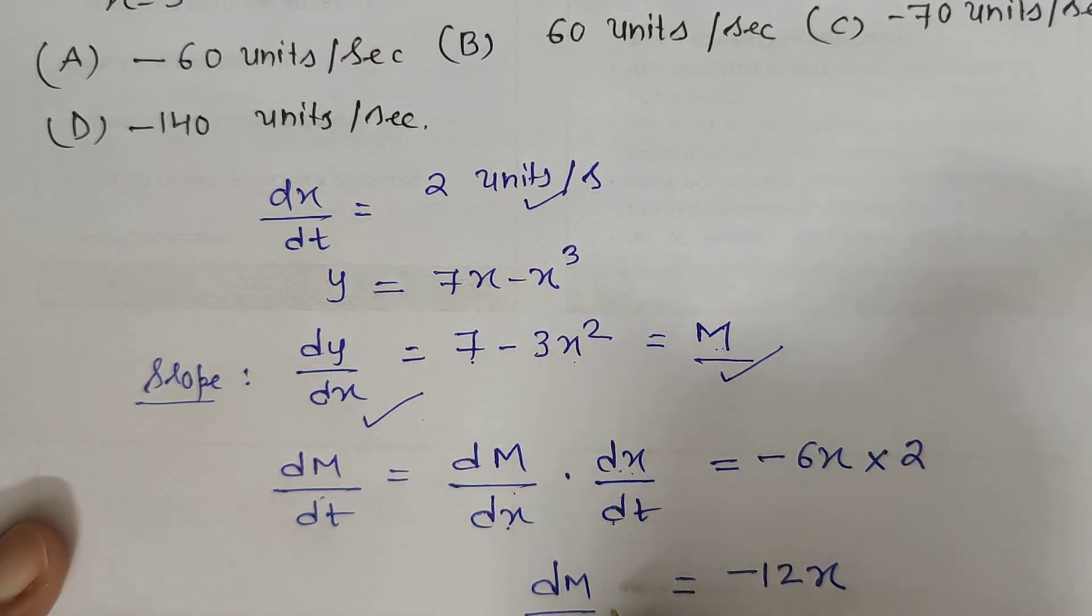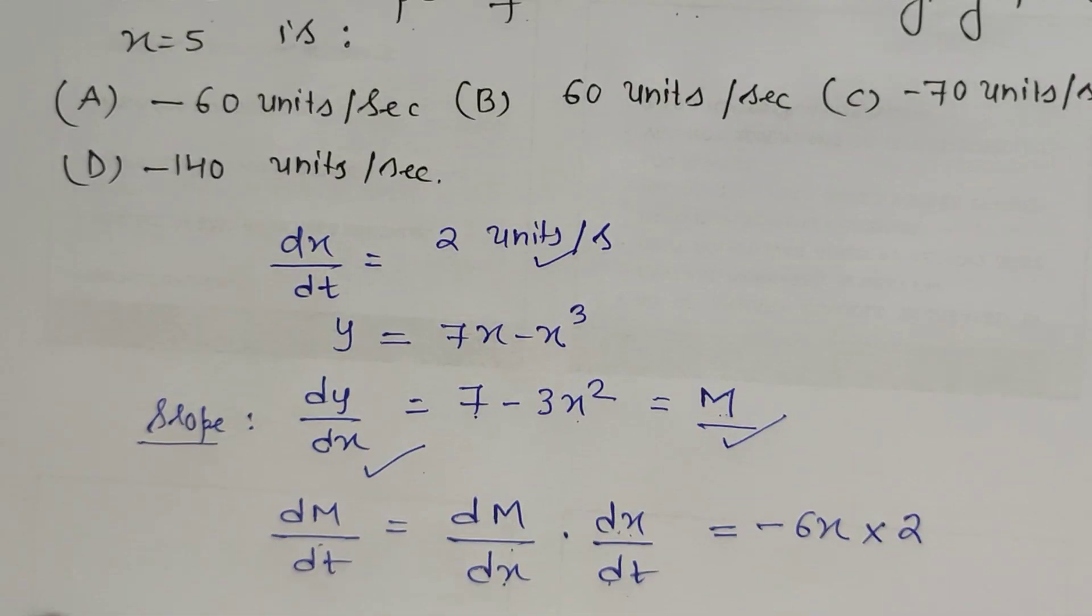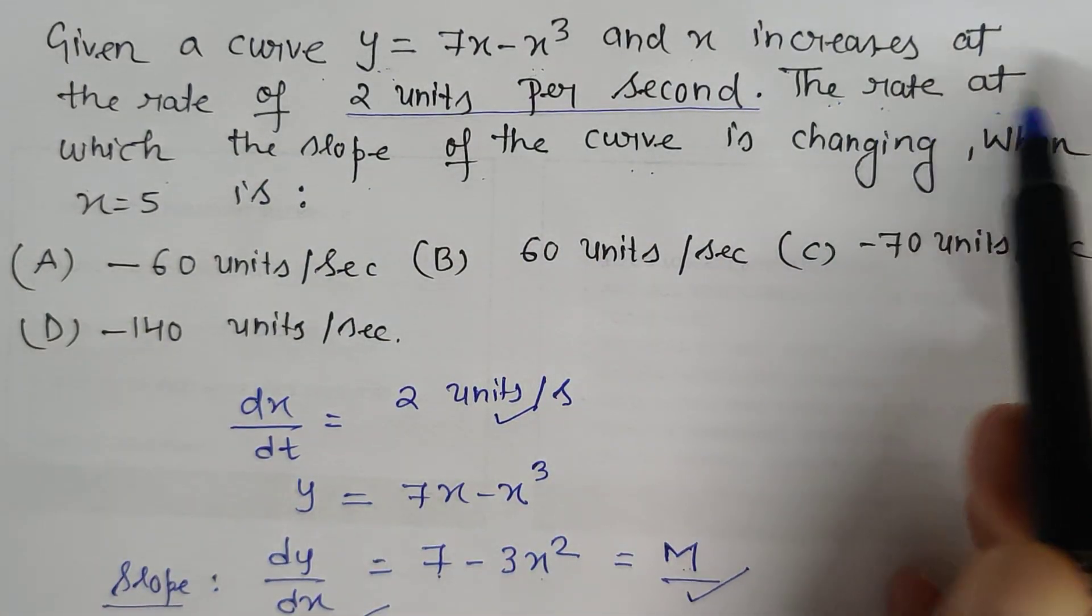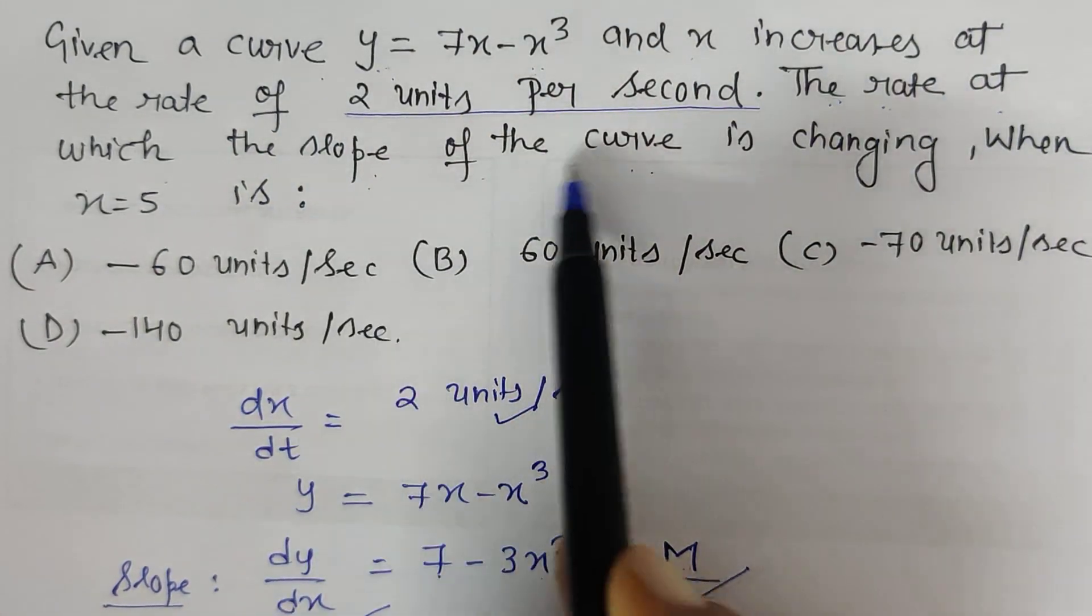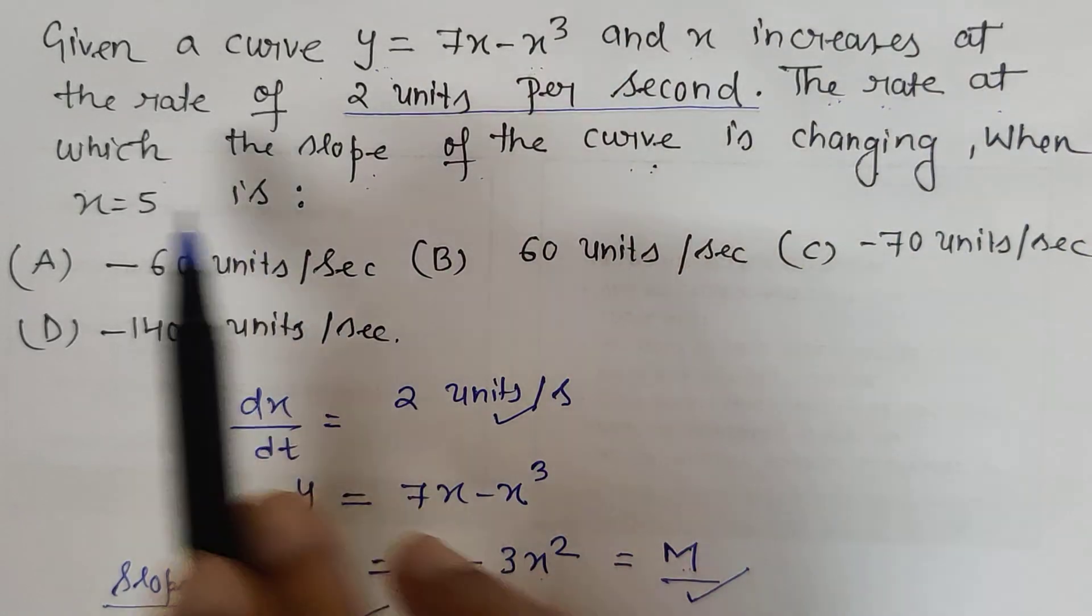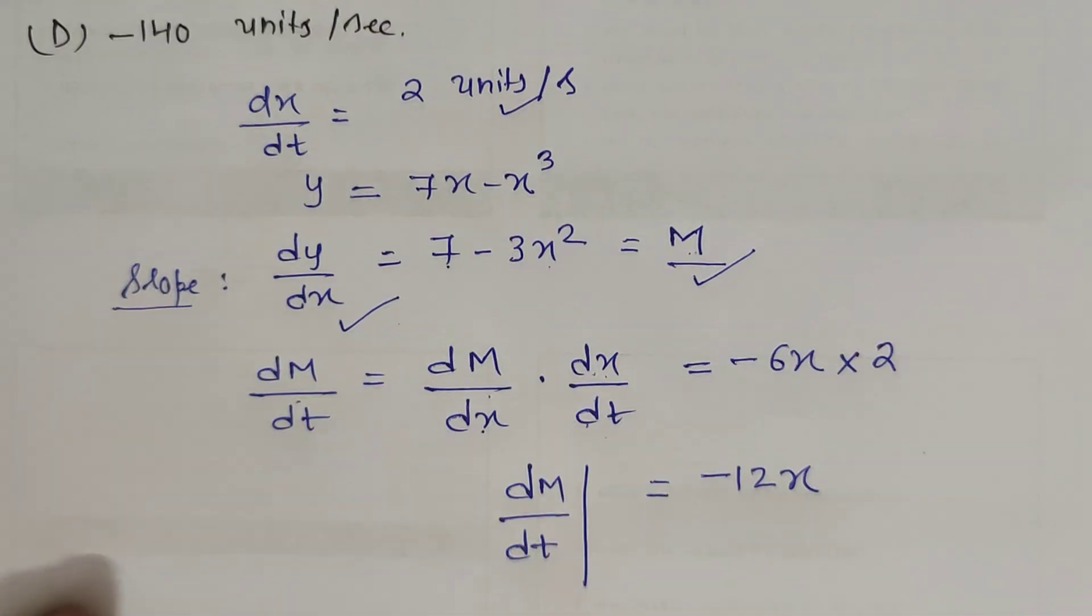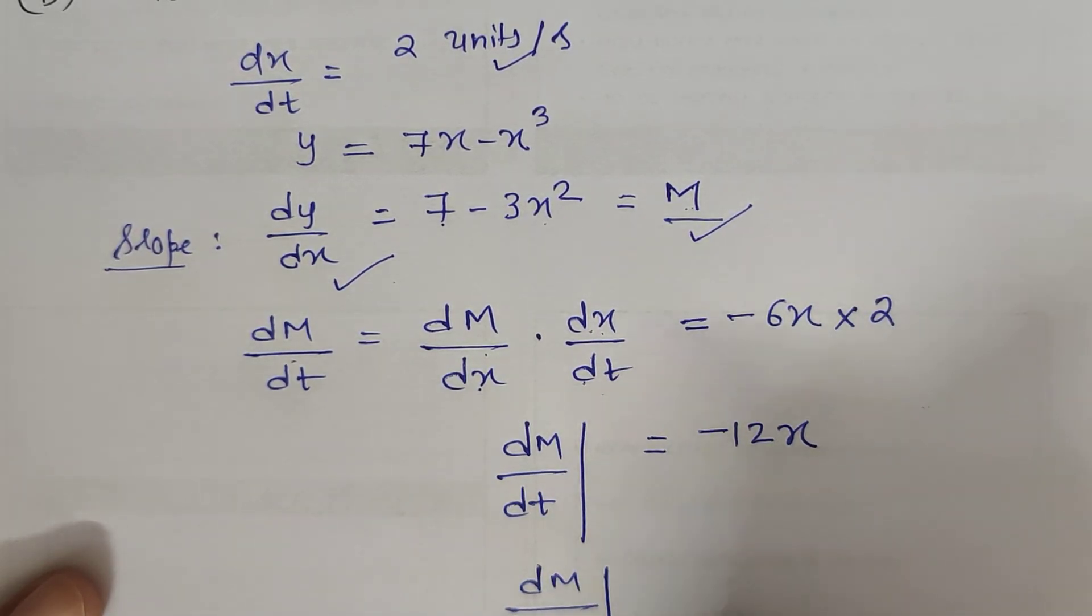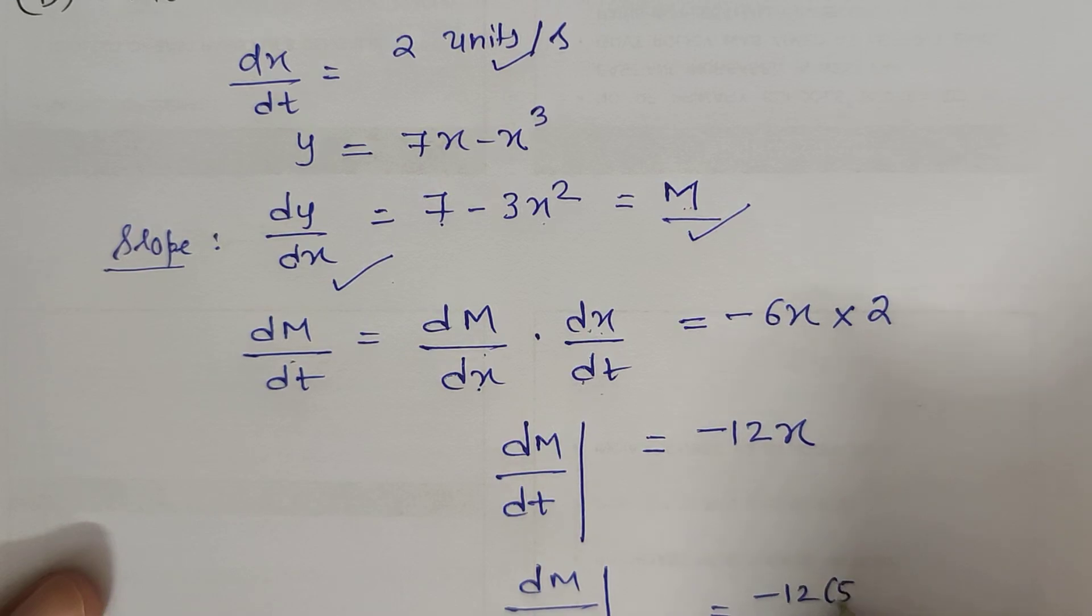So this is dM/dt, the rate of change of the slope. In the question we are asked to find the rate of change of the slope of the curve when x is 5. So when x is 5, the rate of change of the slope is -12 × 5.